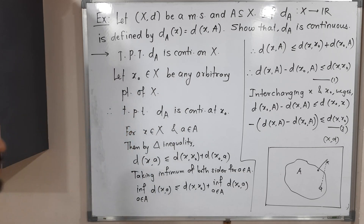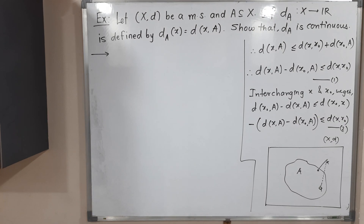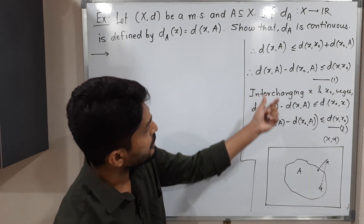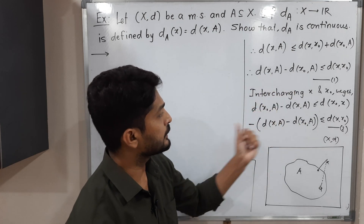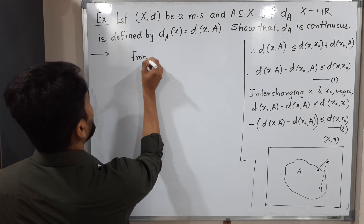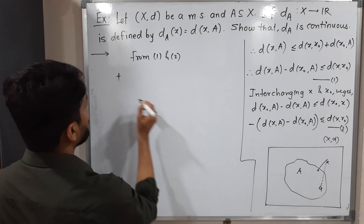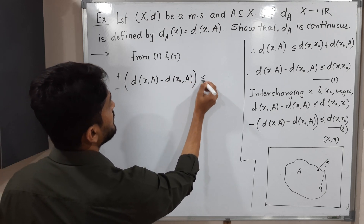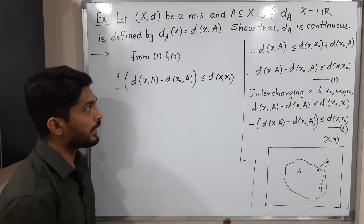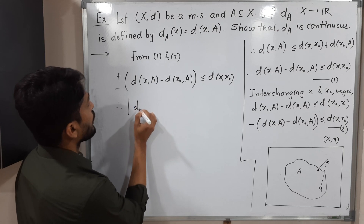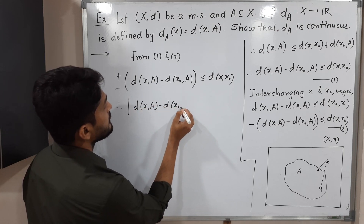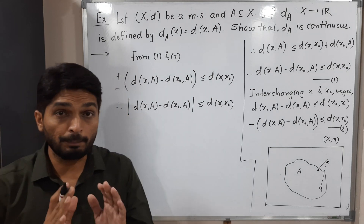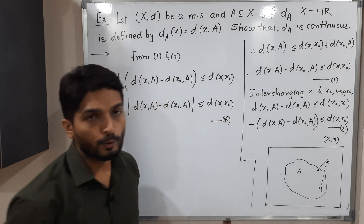We have inequality (1) and inequality (2), both with the same right-hand side d(x, x₀). On the left-hand side we have the same two terms but with opposite signs. Combining (1) and (2): whether we have plus or minus, d_A(x) − d_A(x₀) ≤ d(x, x₀), so we can write: |d_A(x) − d_A(x₀)| ≤ d(x, x₀). This is a very important inequality — let us call it (★).